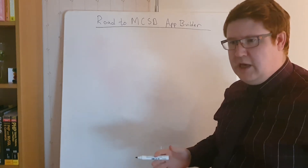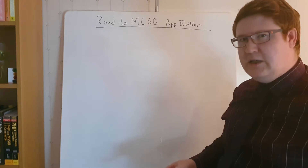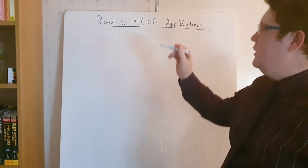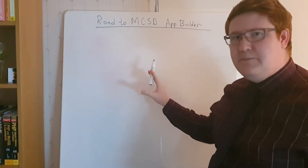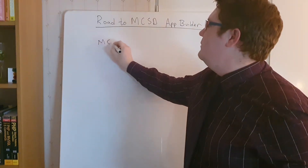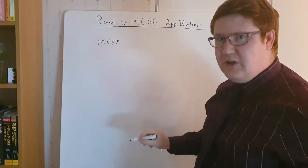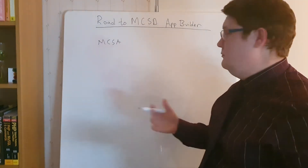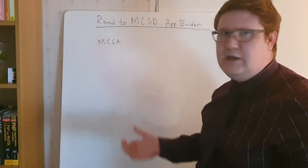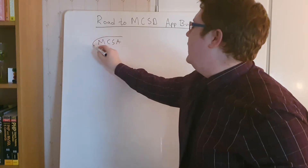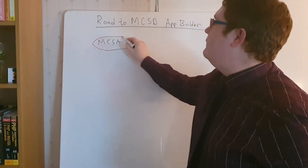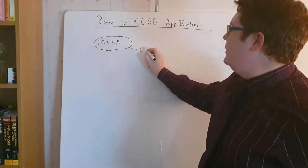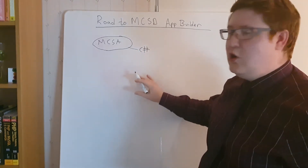There are different paths you can take, but in this case I am going for the app builder path. First, before you can get the MCSD, you have to get a certification called MCSA — Microsoft Certified Solutions Association — and to get that you have two options.